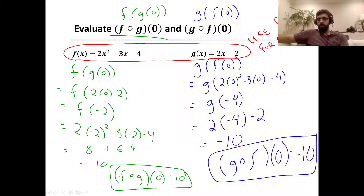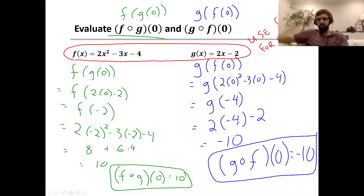For g of f of 0, we take 0 as our input for f first, and the output of f of 0 becomes the input for g. f of 0 is 2 times 0 squared minus 3 times 0 minus 4, which simplifies to 0 minus 0 minus 4, giving negative 4. So negative 4 becomes our input for g. g of negative 4 is 2 times negative 4 minus 2, which is negative 8 minus 2, equaling negative 10. So g of f of 0 equals negative 10.